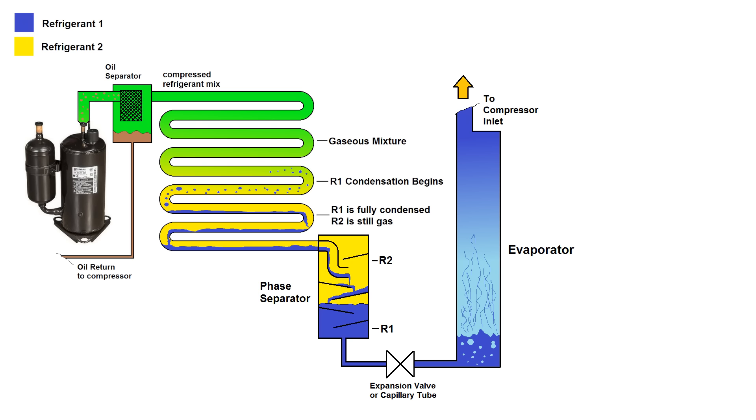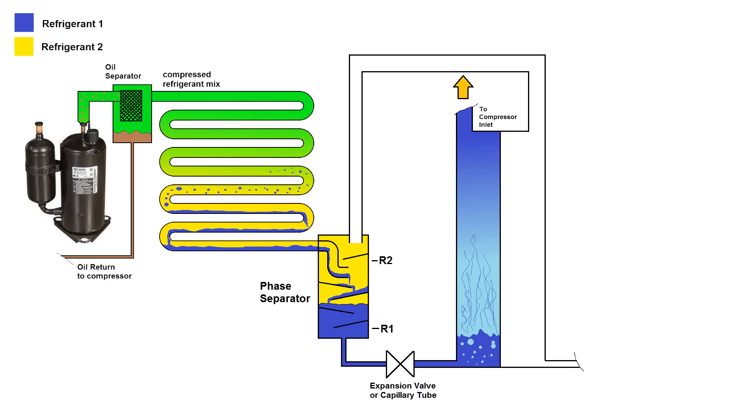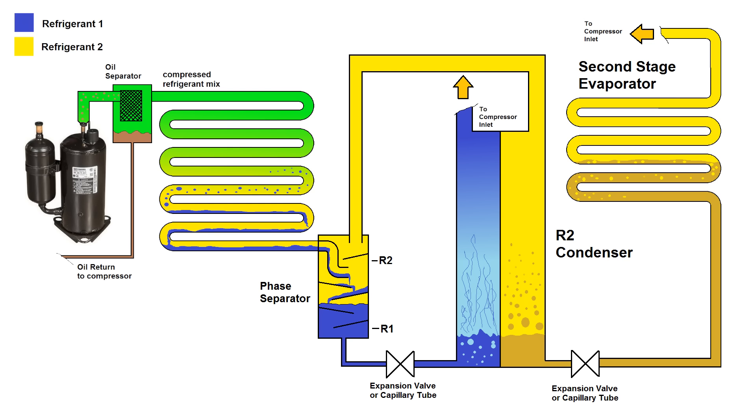And just like with a standard cascade system, the evaporator is actually one side of a heat exchanger. Now at the same time, the gaseous refrigerant two leaves the phase separator through the top and flows into the heat exchanger where refrigerant one is evaporating and getting really cold. The combination of high pressure and low temperature of refrigerant two now causes it to condense, at which point it goes into a separate expansion valve or capillary tube where its pressure drops and it boils in a second evaporator, which is the business end of this whole system.